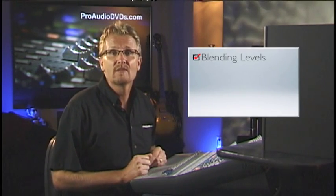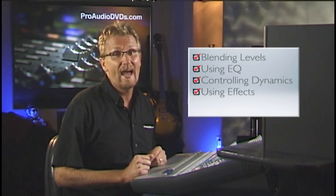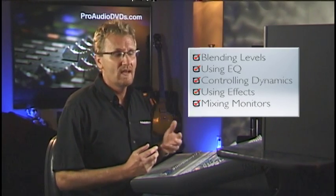What I'll be showing you are practical examples of what I call the big five things we need to do with mixes: blending levels, using EQ, controlling dynamics, using effects, and mixing monitors. Once you know these are the main things to do, all you need is to find out how to access these functions through your own mixer. Using EQ on an analog board is as simple as selecting the EQ knobs on that channel.